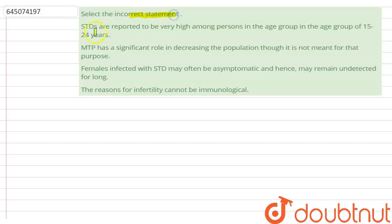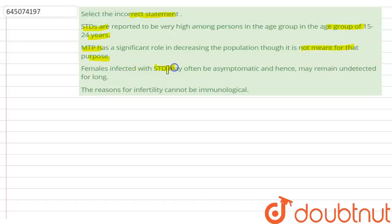Hello students. The question is: select the incorrect statement. First option: STDs (sexually transmitted diseases) are reported to be very high among persons in the age group of 15 to 24 years. Second: MTP (medical termination of pregnancy) has a significant role in decreasing the population, though it is not meant for that purpose. Third: females infected with sexually transmitted disease may often be asymptomatic and hence may remain undetected for long. Fourth: the reason for infertility cannot be immunological.